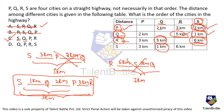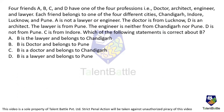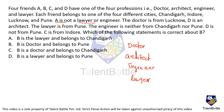Four friends A, B, C, and D have one of four professions: doctor, architect, engineer, and lawyer. Each friend belongs to one of four cities: Chandigarh, Indore, Lucknow, and Pune. A is not a lawyer or engineer, so A must be a doctor or architect. The doctor is from Lucknow.